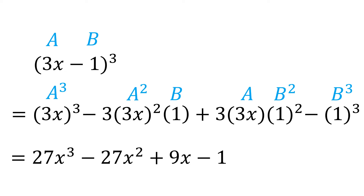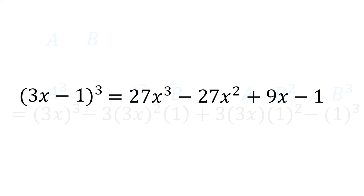So therefore, (3x minus 1) cubed is equal to 27x cubed minus 27x squared plus 9x minus 1.